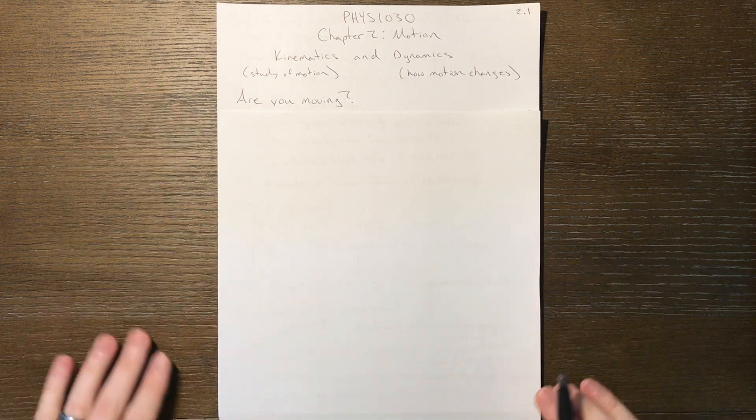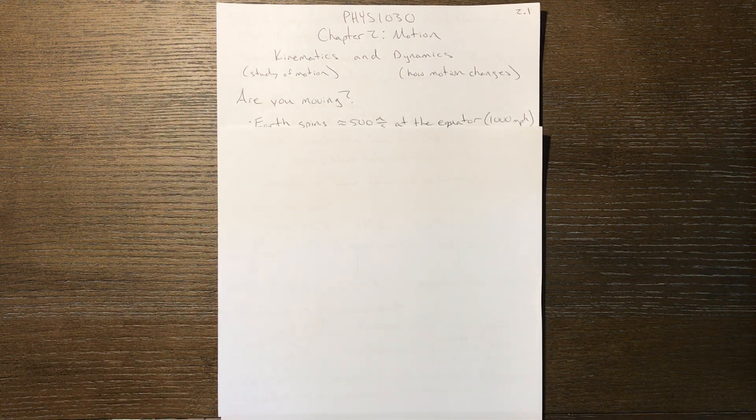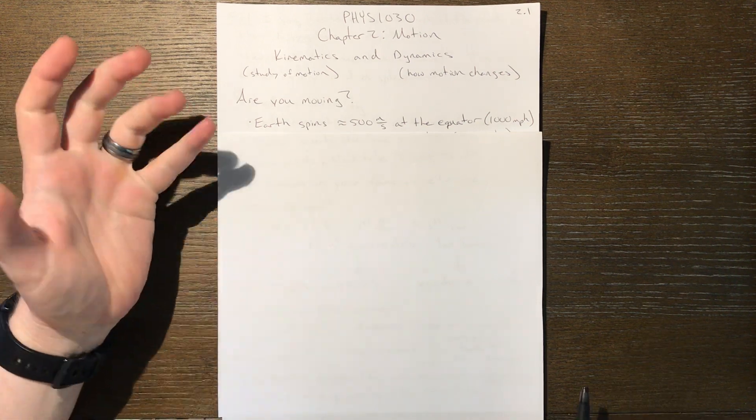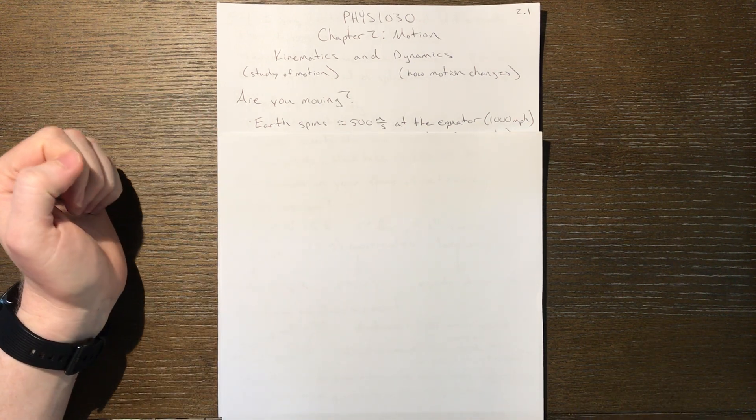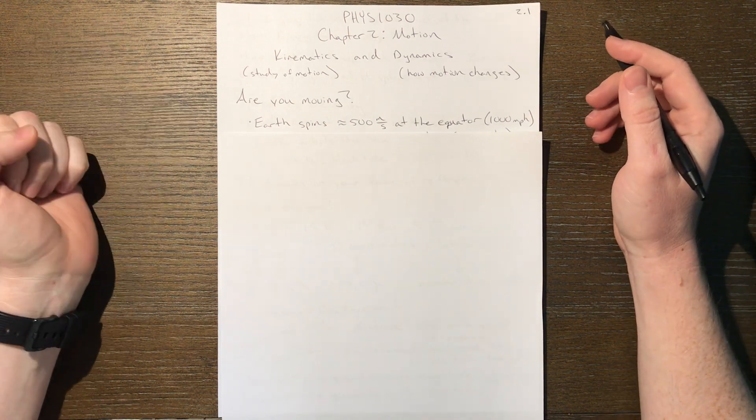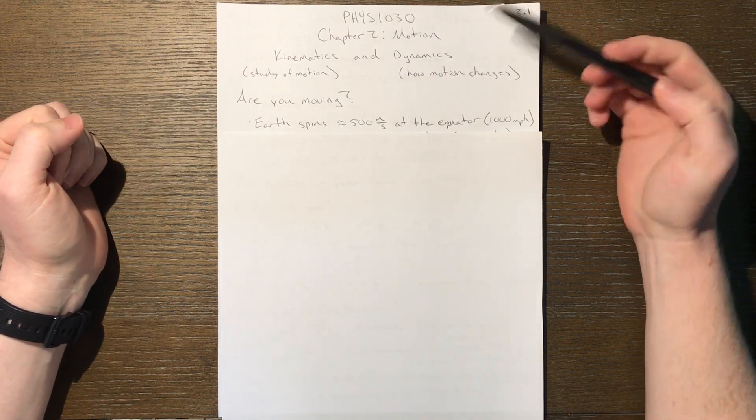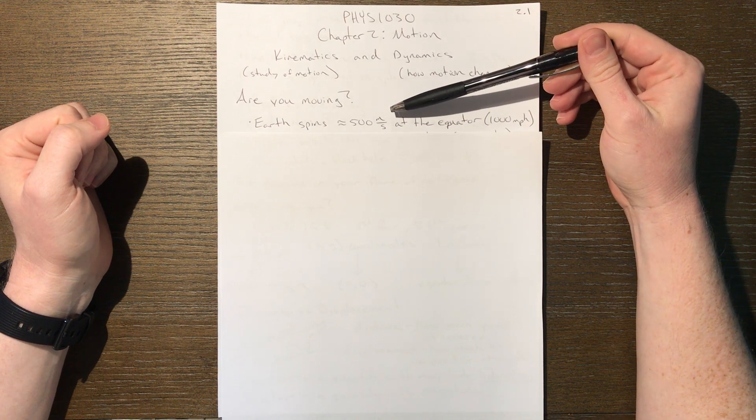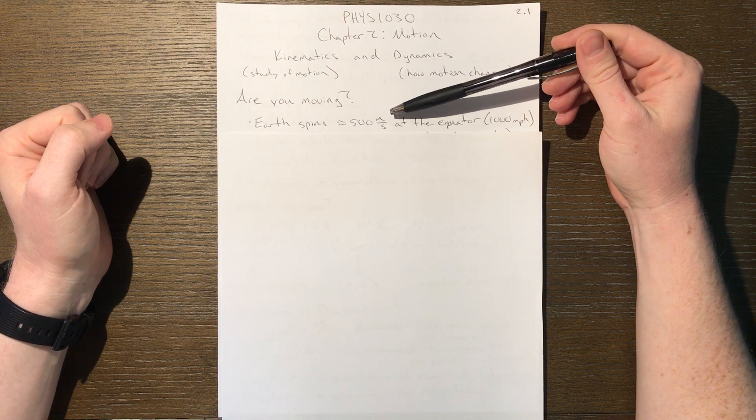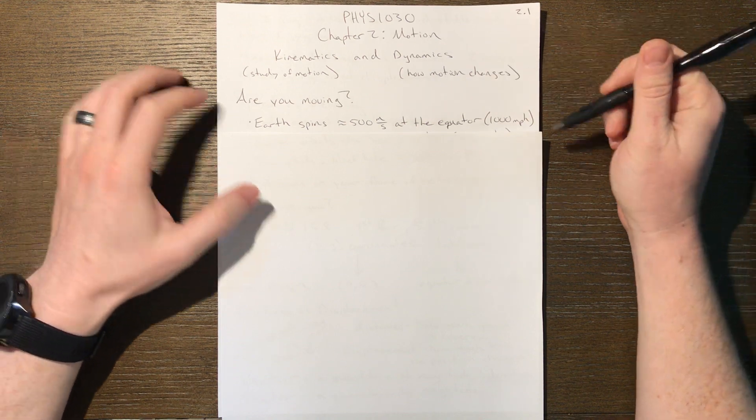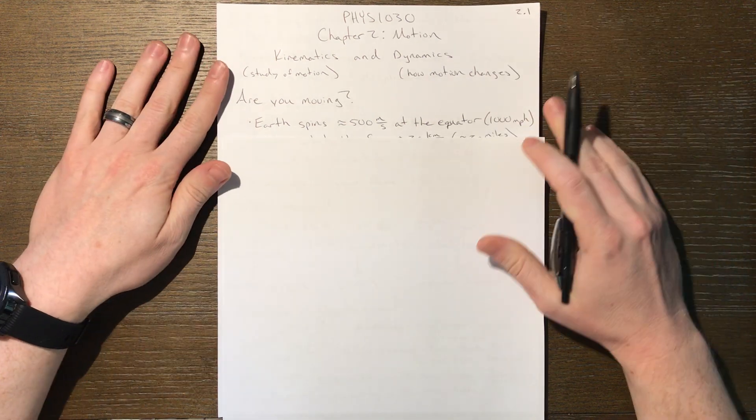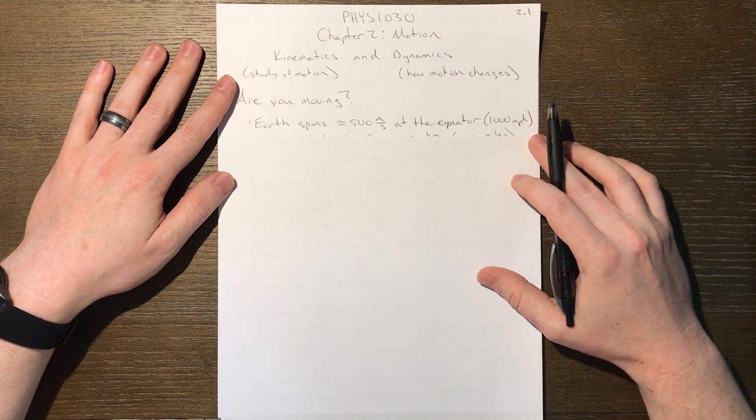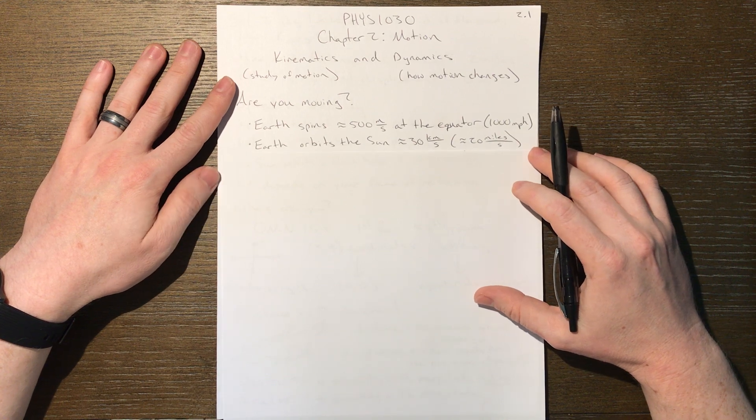As you probably suspected from the get-go, yes, the answer is you are indeed moving, and we can look at it on so many different levels. For instance, the Earth is spinning on its axis, and that spinning causes motion on the surface - quite a bit actually, about 500 meters per second is how the position of the equator or any person on the equator is changing. That'd be equivalent to like a thousand miles per hour, quite a great speed or velocity.